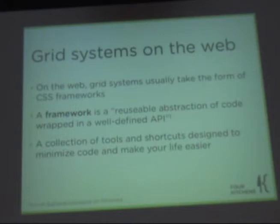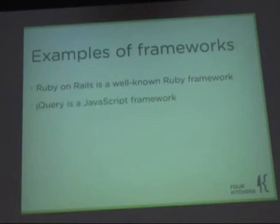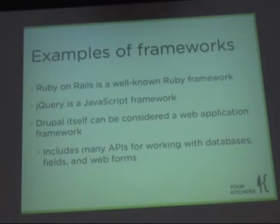Grid systems on the web usually take the form of a framework. Framework is maybe doing too much justice to what 960 is — it's more lightweight than that. I consider it a code snippet library of things you can use to make a grid. It's not going to do everything for you, but it's also not going to make those design decisions for you that should be left up to a designer. Examples of frameworks: Ruby on Rails is a well-known Ruby framework. jQuery is the JavaScript framework inside Drupal itself. And Drupal itself can be considered a web application framework — it includes many APIs.